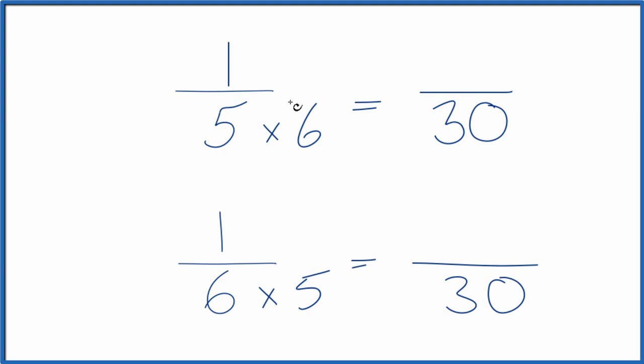But we can't just multiply the denominator. We also need to multiply the numerator. So we have 5 times 6. We need 1 times 6 here. That gives us 1 times 6 is 6. We have 6 thirtieths. When we're multiplying by 6 over 6, that's just 1. 6 divided by 6 is 1. So we don't change the value, just the way it's written. These are equivalent fractions here.